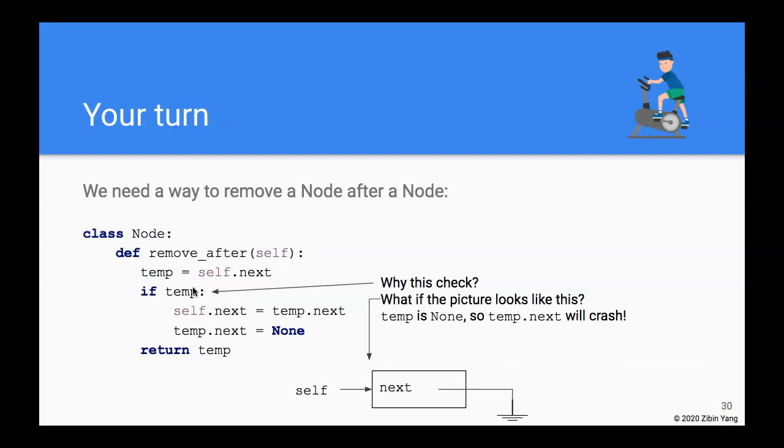Remember temp is assigned self.next, right? So potentially self.next is pointing to None, pointing to nothing. For example, if it's the last node in the linked list, right? So in that case we really do not want to do temp.next—that would be equivalent to doing None.next.